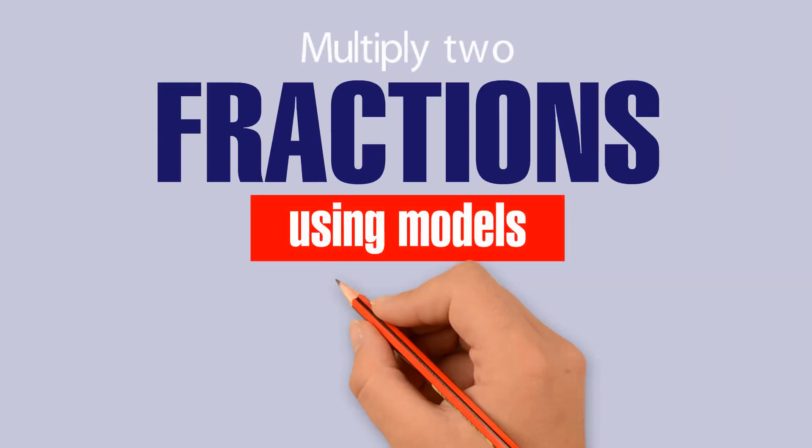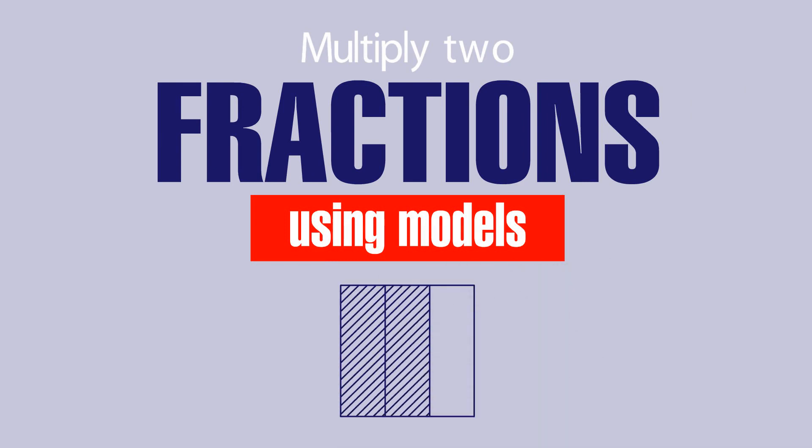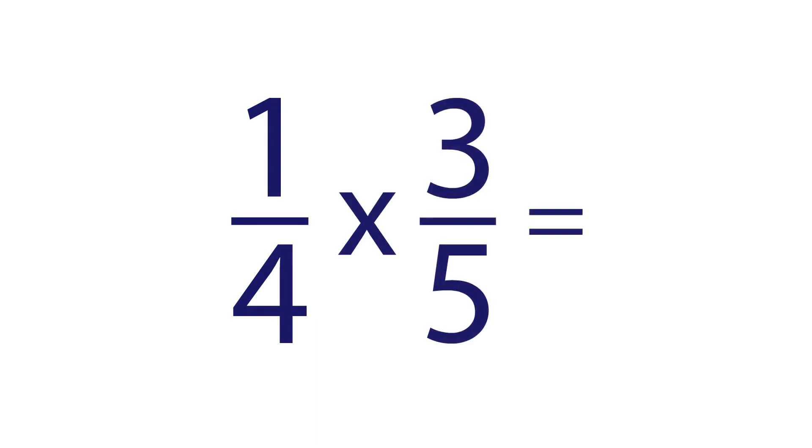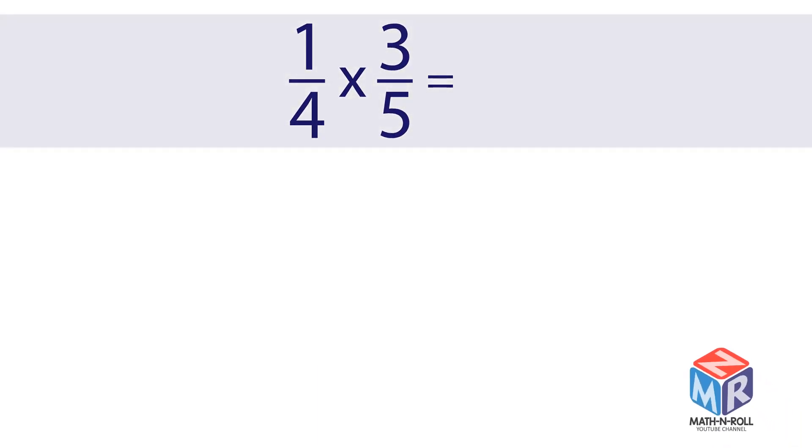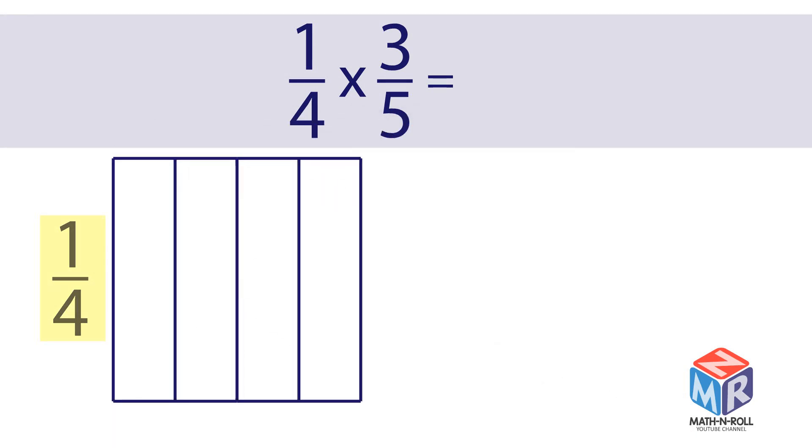Multiply two fractions using models. 1 4th times 3 5ths. 1 4th. The first model has four columns. One out of four columns is shaded.